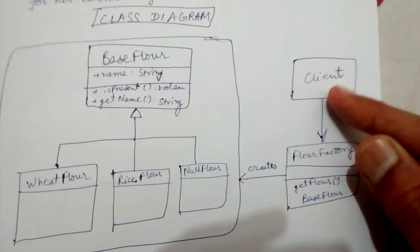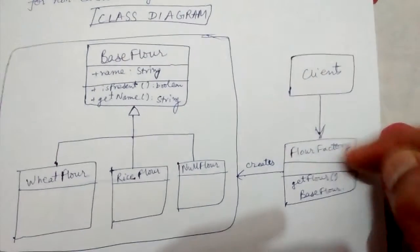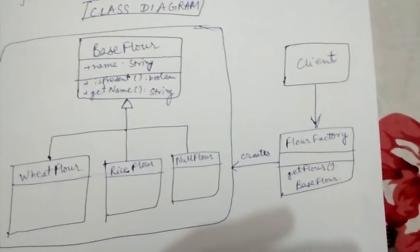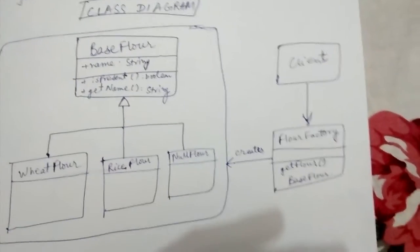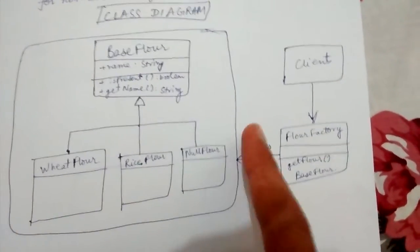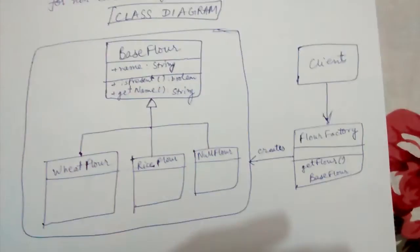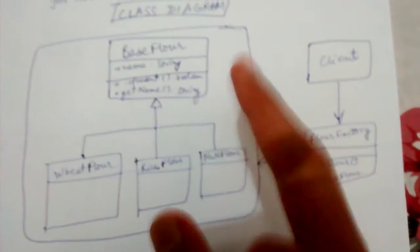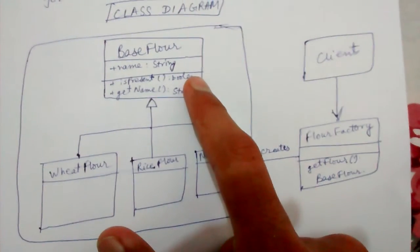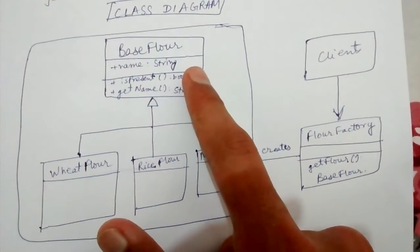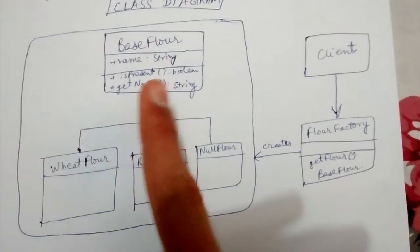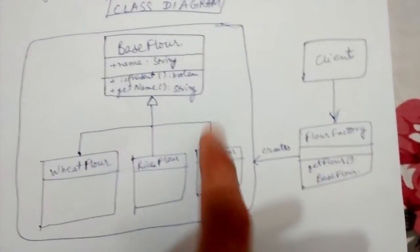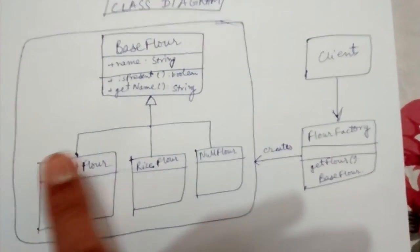This is the client—it has a FlourFactory instance, so it's associated with that. The FlourFactory has a 'creates' dependency, meaning it creates these flour objects which are inherited from the BaseFlour class. This is the inheritance sign; if you don't know this, please look at my class diagrams videos.